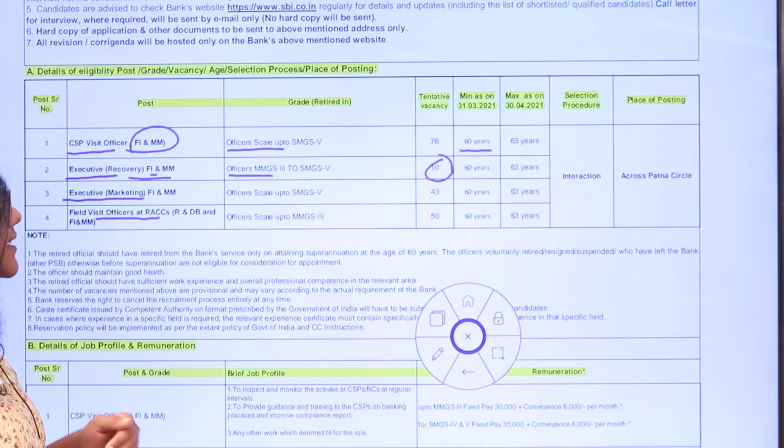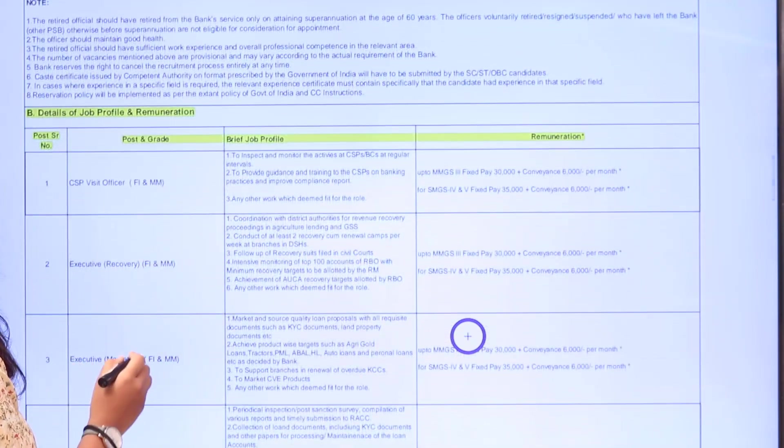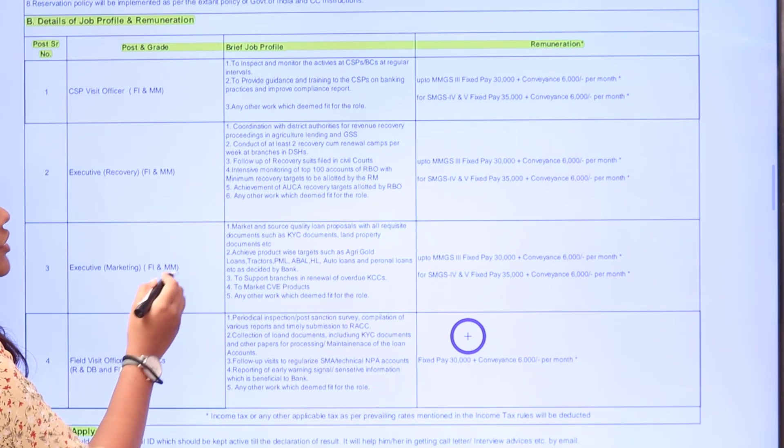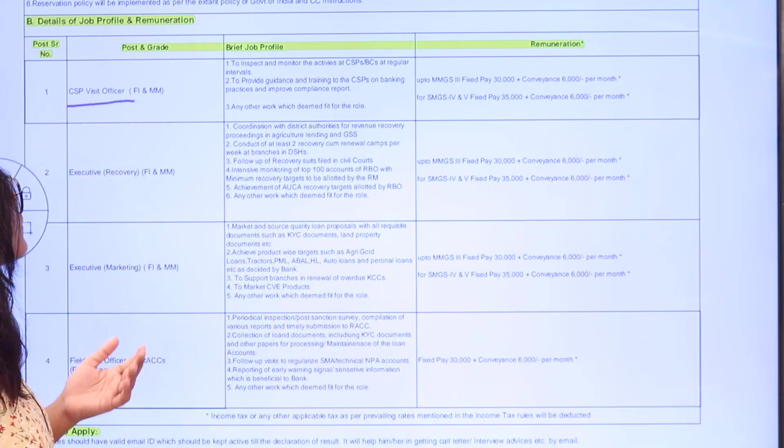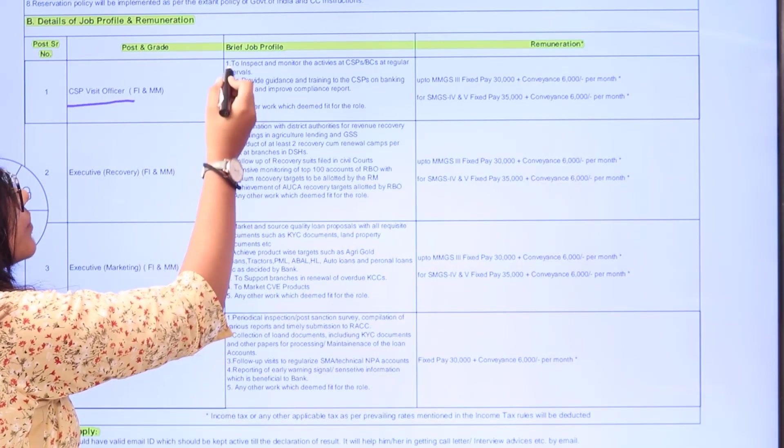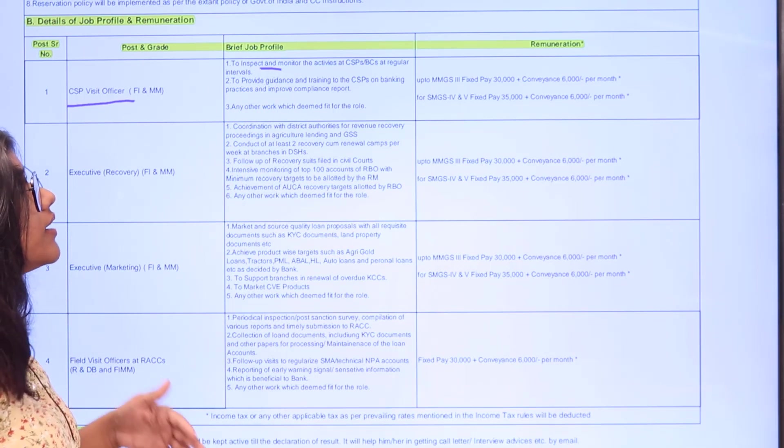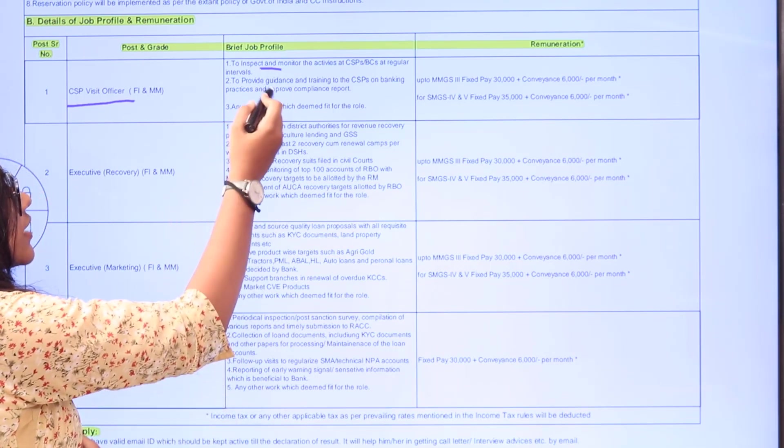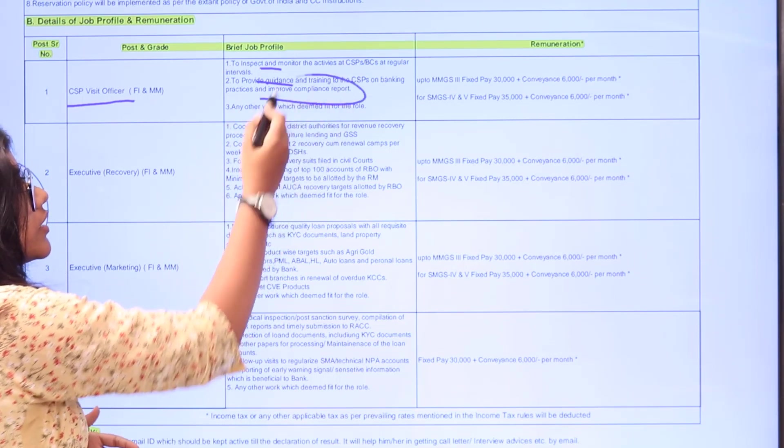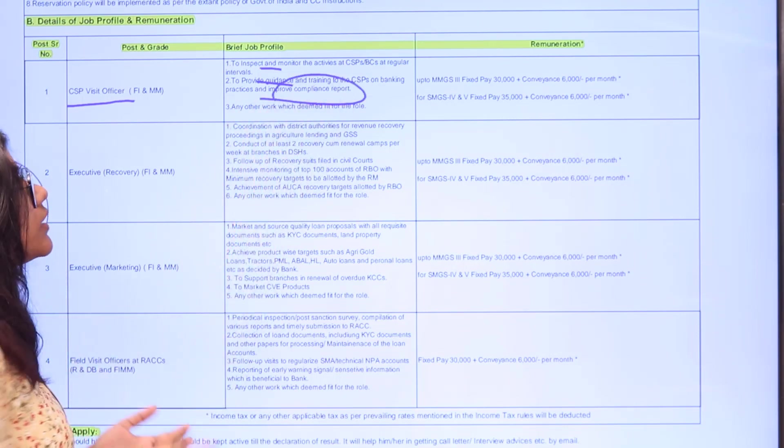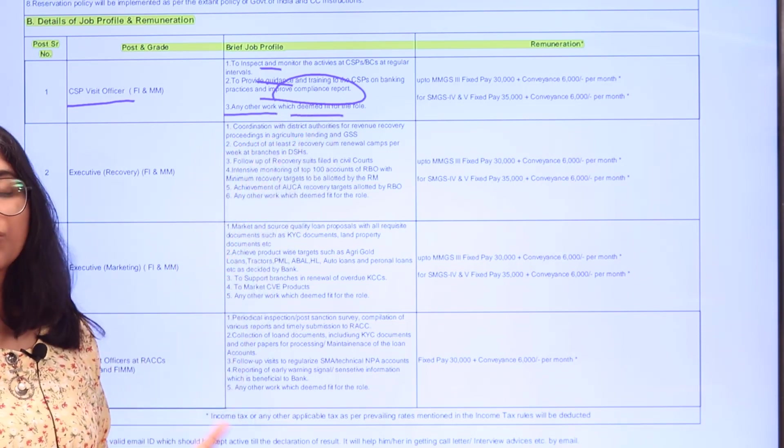Now heading over to the job profile and remuneration. For CSP Visit Officer, the job description is to inspect and monitor the activities of CSP or VCS at regular intervals, provide guidance and training to CSPs on banking practices, improve compliance reports, and any other work deemed into the role.